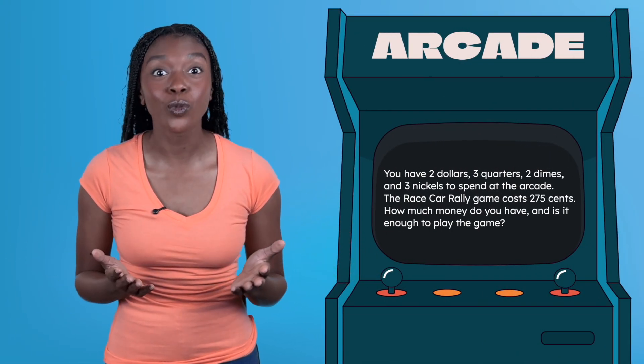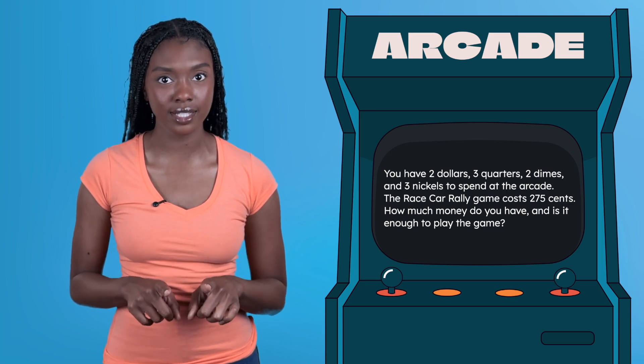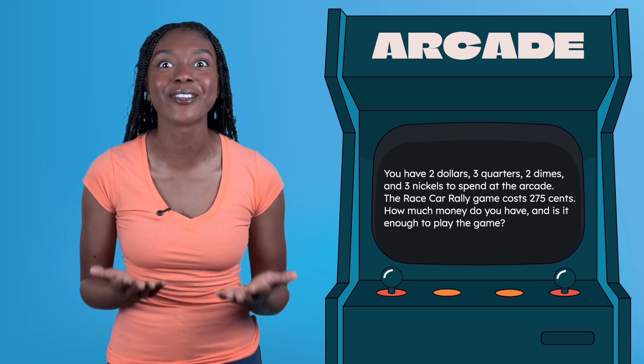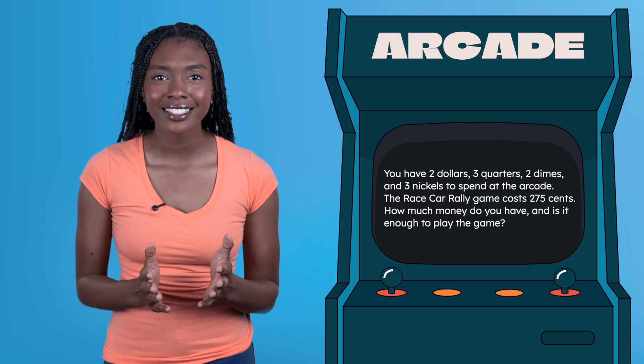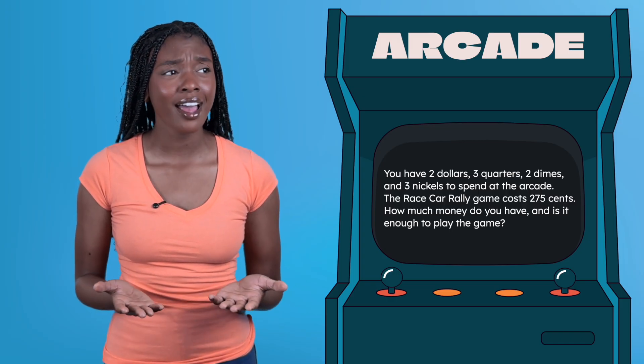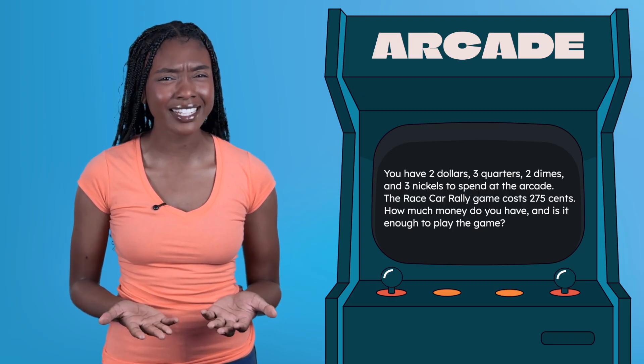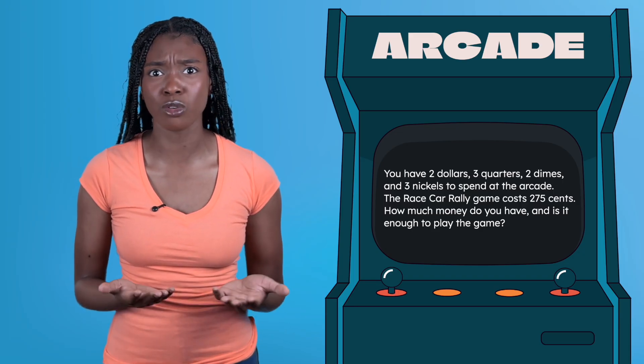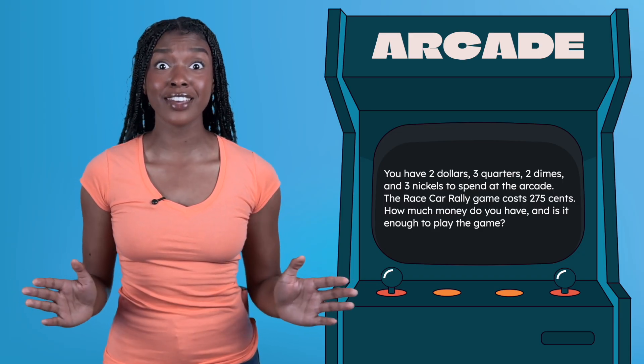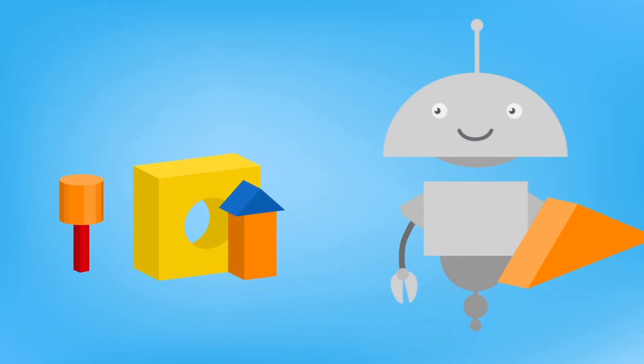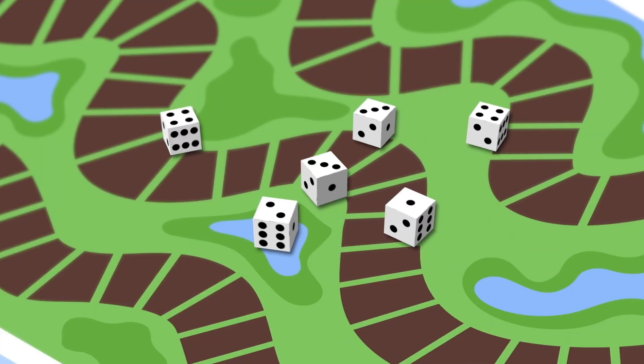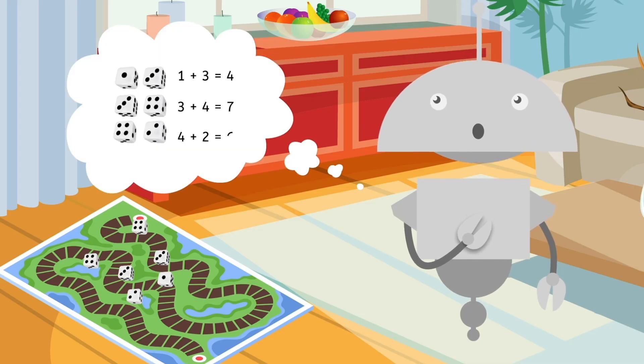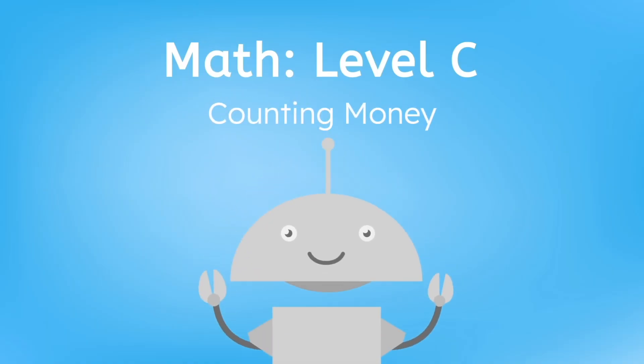In our last quest, we added coins up to 100 cents. This time we're going even bigger with values greater than 100. And this quest includes dollars too. Dollars and cents in the same problem. How are they connected and how do we work with values greater than 100 cents? Let's dive in and find out.